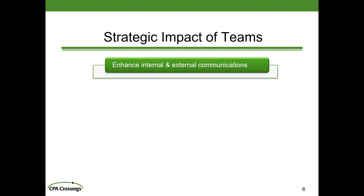You start internally, get everybody comfortable with it as a primary means of communicating, and then usually the next phase is to open it up for external communications. For example, if you're a construction company with suppliers and contractors working on a building project, you can set up a team for that specific building, invite selected individuals from your suppliers and contractors, and have your conversations there instead of via email. You've got to see it in action to see the value, and it grows in value as everyone in your organization gets more comfortable with it as their primary means of communication.